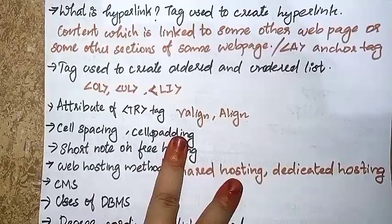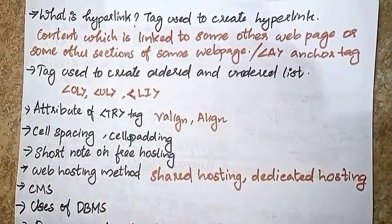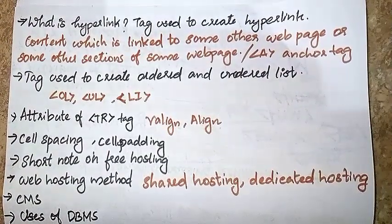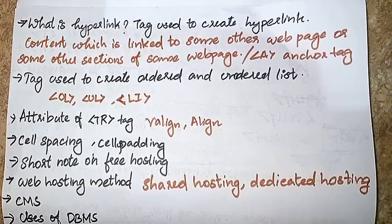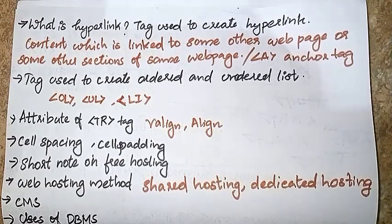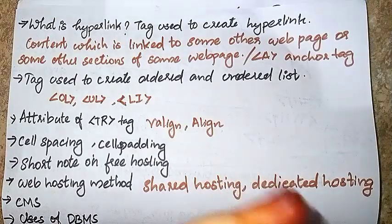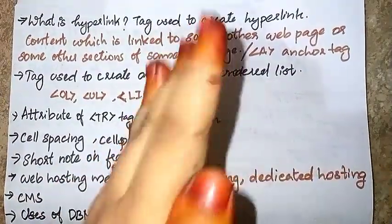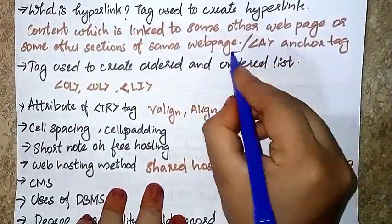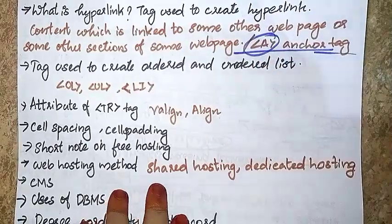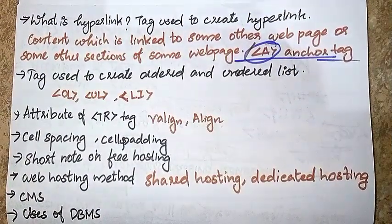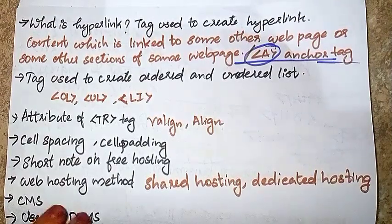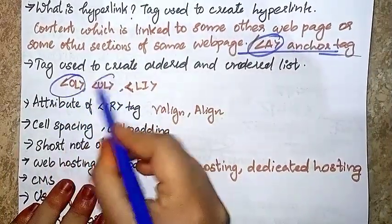What is the hyperlink tag? It is used to create a hyperlink. To create an unordered list, we use the UL and LI tags. To create an ordered list, we use OL, UL, and LI.